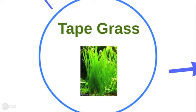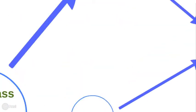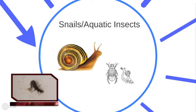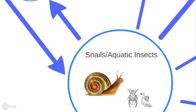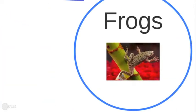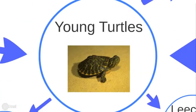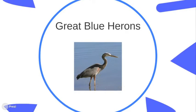What eats tape grass? River turtles, decomposers, snails, and aquatic insects eat tape grass. What eats snails and aquatic insects? Gar eats them, frogs eat them, skunks eat them, young turtles eat them, and great blue herons and many other birds eat them too.